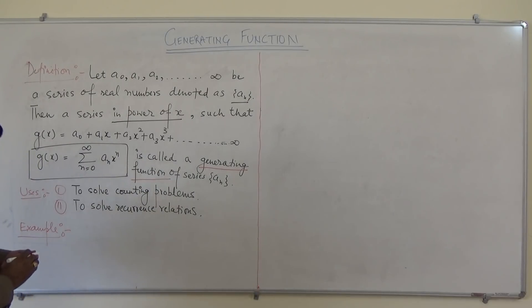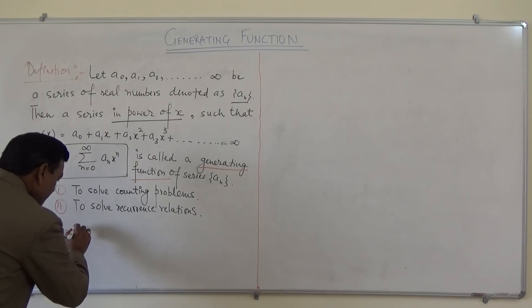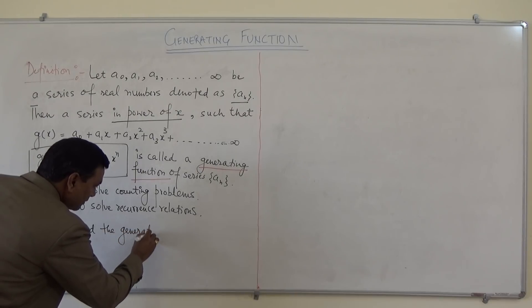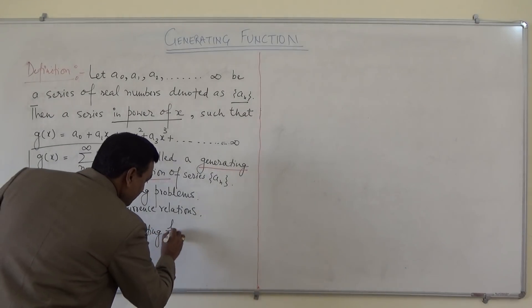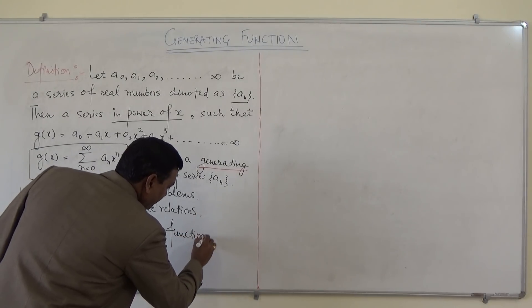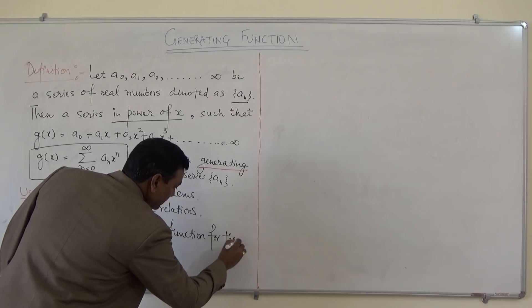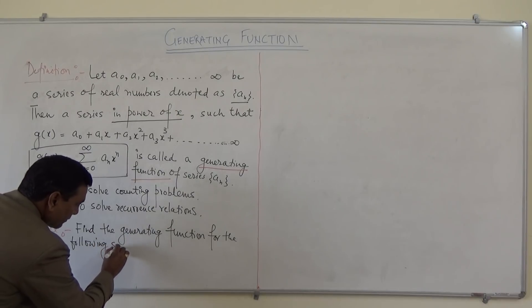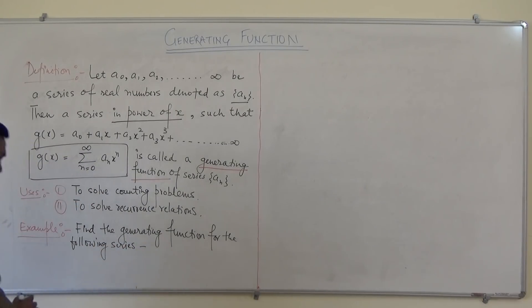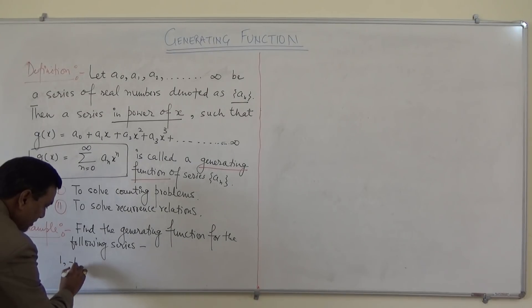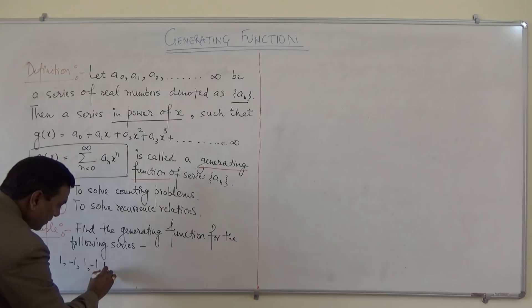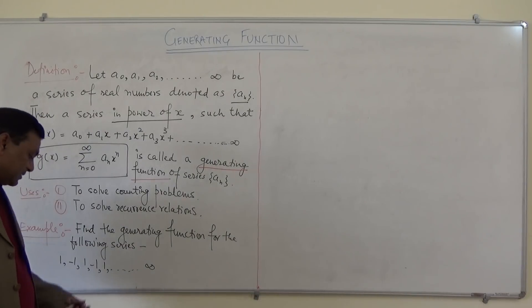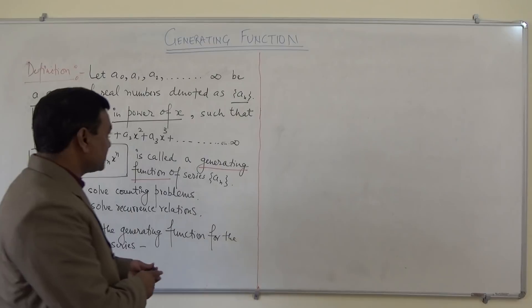We have to find out the generating function for the following series. The series is: 1, −1, 1, −1, 1, and so on up to infinity. Let us suppose that this is the series aₙ. Now we will see the solution.